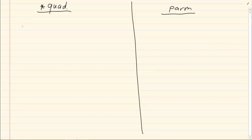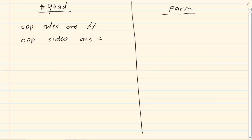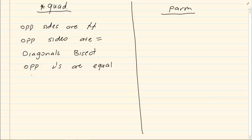The first one is that you prove that the opposite sides are parallel. The second one is that you prove that the opposite sides are equal. The third one is that the opposite angles are equal. The fifth one is that one side is parallel and equal.